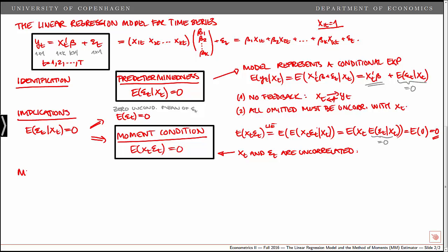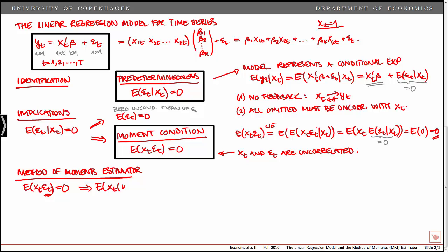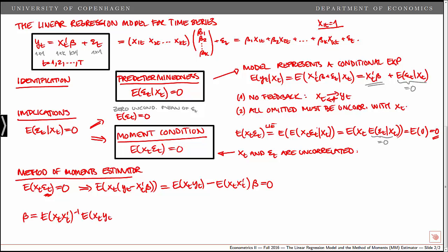Let's use our moment condition to derive the method of moments estimator. We start from the moment condition: expected value of xt epsilon t equals zero. We plug in for epsilon t to get the expected value of xt times (yt minus xt prime beta) equals zero. This expands to the expected value of xt yt minus the expected value of xt xt prime times beta equals zero. If the expected value of xt xt prime is non-singular, we can invert it and derive the population parameter beta as the inverse of E[xt xt'] times E[xt yt].